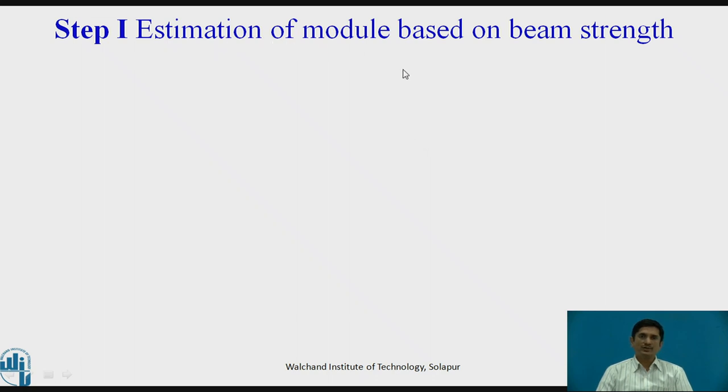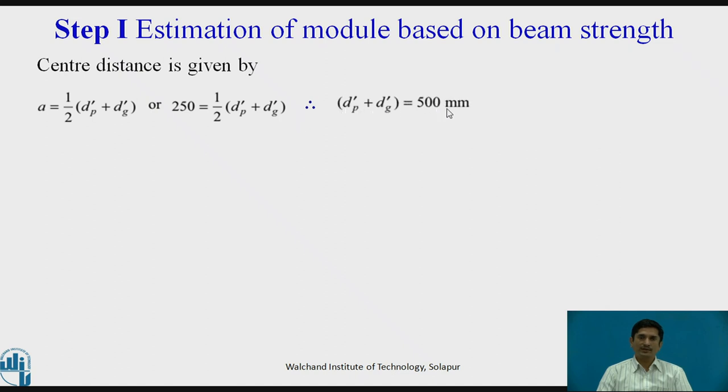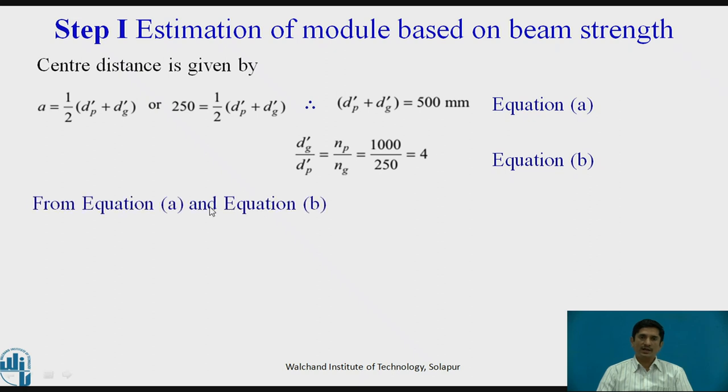First we need to estimate the module based on the beam strength. For this, we need to start with the first part. Centre distance A equals half dp dash plus dg dash. We know that centre distance is 250. Hence 250 equals half of dp dash plus dg dash. Therefore, we can say that dp dash plus dg dash equals 500 mm. This is equation A. We also know that dg dash upon dp dash equals np upon ng that equals 1000 upon 250 that equals 4. This is equation B. With the help of equation A and B, we can calculate that dp dash equals 100 mm and dg dash equals 400 mm. That means we know now the diameter of the pinion and diameter of the gear.